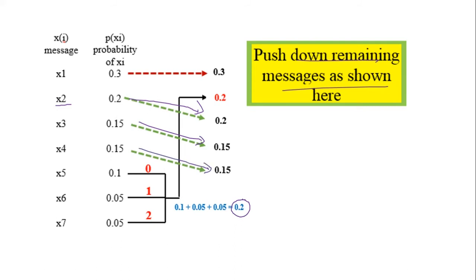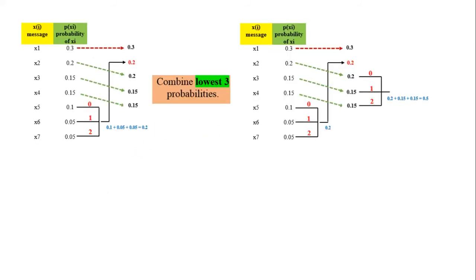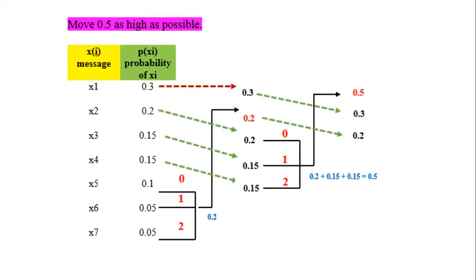You can also see the binary coding example to understand it better. Then we combine the lowest three probabilities again. After moving down, we combine: 0.2 plus 0.15 plus 0.15 to get 0.5. We proceed this procedure until only three messages remain at the end. Using 'move as high as possible', we move this 0.5 probability to the position of x1, and push down the remaining probabilities as shown.